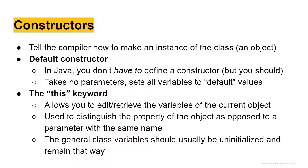Let's talk about constructors. Constructors basically tell the compiler how to make an instance of the class, also called an object of the class. We have two different types of constructors: the default constructor and the parameterized constructor. Let's start with the default constructor.